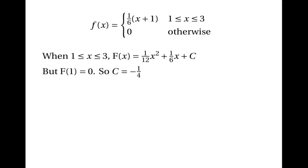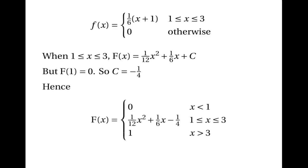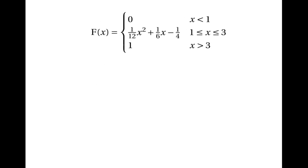Now we can state the cumulative distribution function: F(x) equals zero when x is less than one; one twelfth x squared plus one sixth x minus one quarter when x is between one and three; and one when x is greater than three. Now we know the CDF, we can find the median by solving the equation F(m) equals a half.